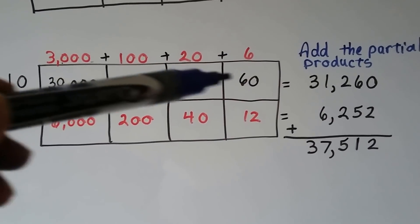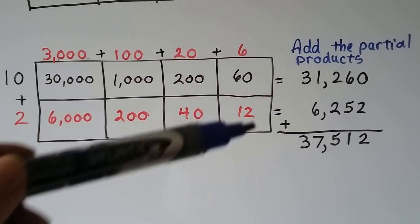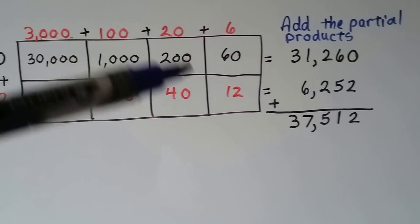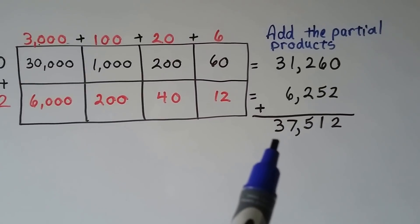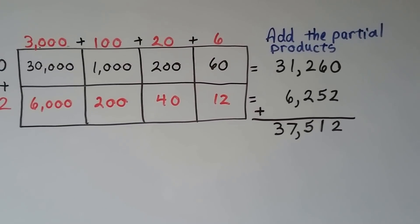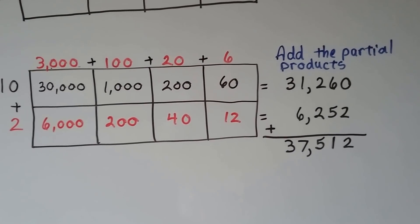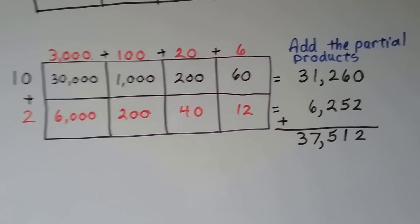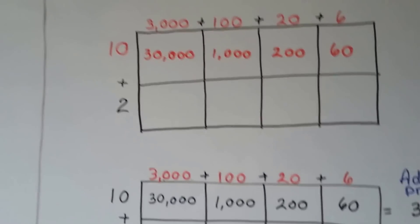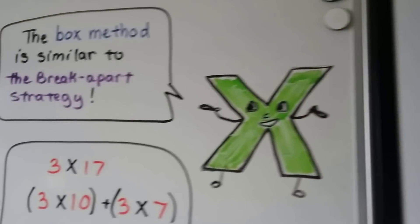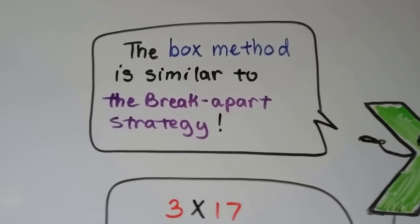We add all of these up. Or you could make one big column and add them all up together. We add the partial products and we get 37,512. So if you want to do big multiplication and you're not really good at doing the long form, you could use the box method.